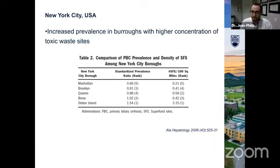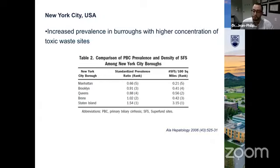An old study from New York City looked at PBC transplant patients, tied them to their zip codes, and separated data by borough. They found one-and-a-half times as many PBC cases on Staten Island as any other borough. Interestingly, Staten Island had six times as many Superfund sites — meaning toxic waste dumps — compared to any other borough. Could something be seeping into the groundwater, perhaps causing increased risk? This hasn't been followed up to look for causation, but it's interesting to speculate there may be an environmental factor.